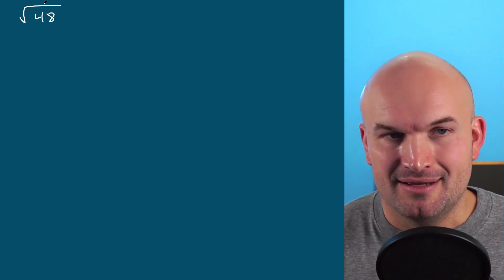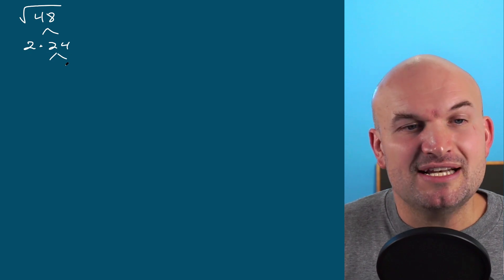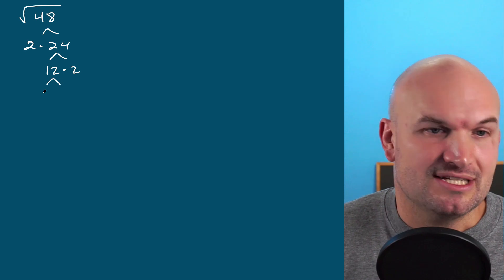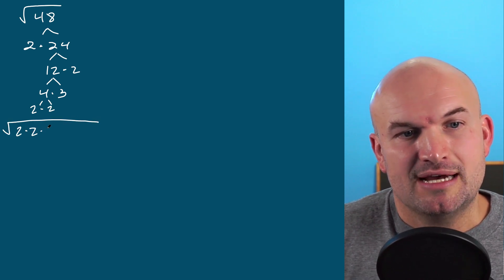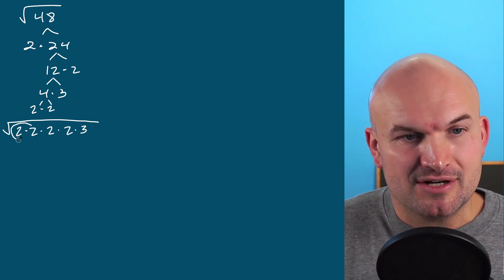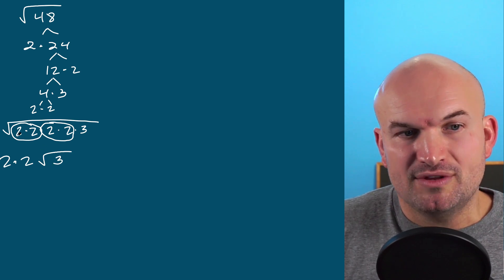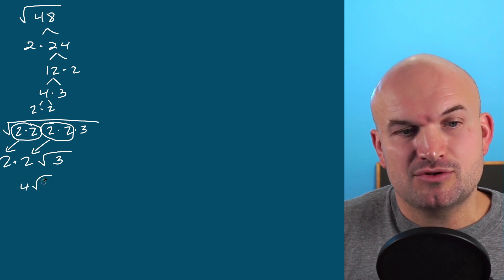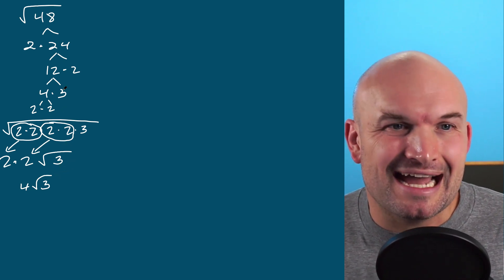The next mistake is spending too much time simplifying radicals. If you're just beginning, that's okay, but we don't want to rely on methods that take far too long. For the square root of 48, a lot of students use prime factorization — dividing by 2 to get 2 times 24, and keep dividing until reaching the prime factorization: 2 times 2 times 2 times 2 times 3. Then they pull out the pairs, giving 2 times 2 times the square root of 3, which is 4 times the square root of 3. It's not a mistake, but it takes a very long time, especially when simplifying multiple radicals.